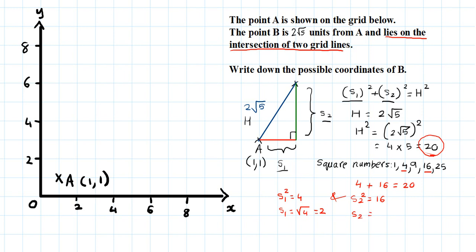So B will be, so this distance in this situation, the first situation would be 2. And this would be 4, the red situation. That means from the point A, you go 2 to the right, and then 1, 2, 3, 4 up. So that's one possible point for B, and the coordinates of that are 3, 5.